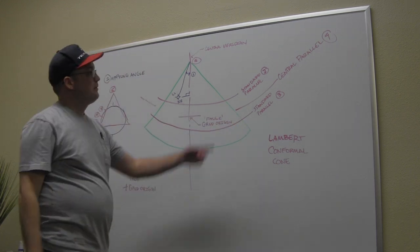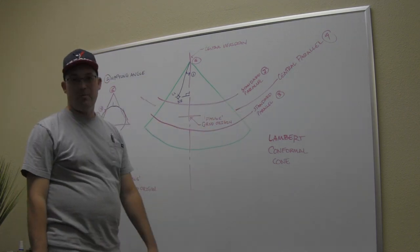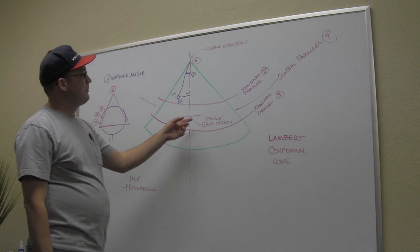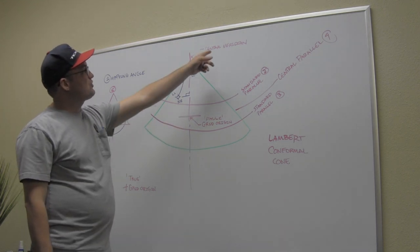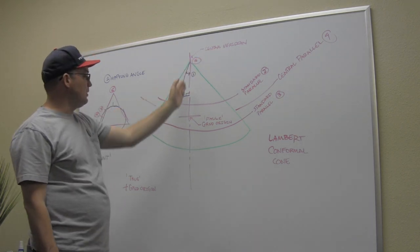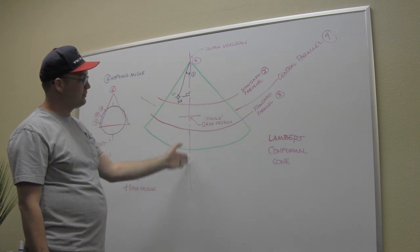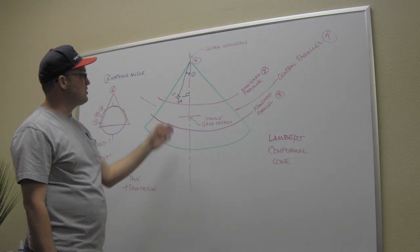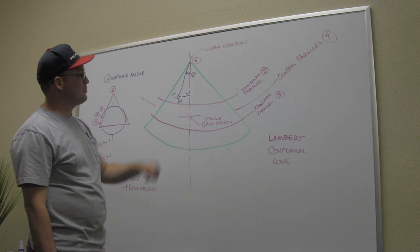The reason they make it secant is because they're trying to reduce the amount of distortion. The spot where the cone cuts through the earth, the ellipsoid, are called standard parallels. There's two, one on the north, one on the south. Then you have what's called the central meridian. That's the middle of the cone. So each zone has two standard parallels and a central meridian.